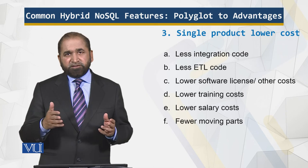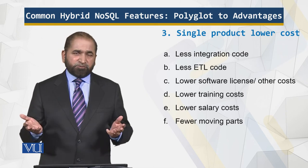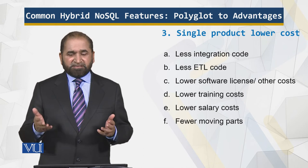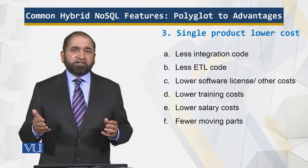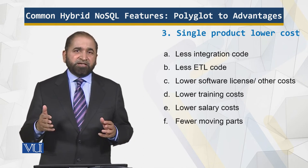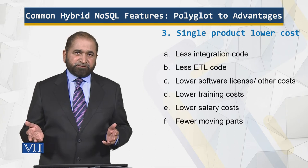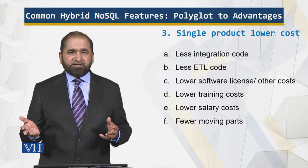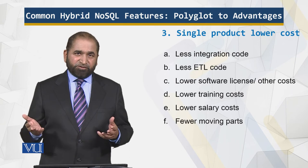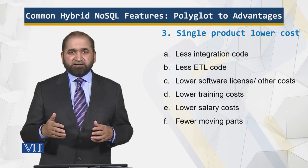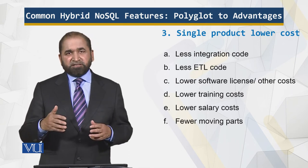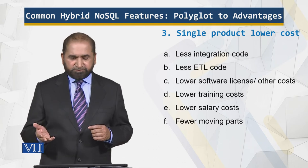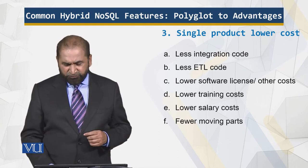Lower training costs — it costs more to train people in multiple products than in a single product. And of course, you don't need multiple specialists. If you have multiple specialists, you have multiple salaries, and that costs more. But if you have a single product, you have a single specialist, and you don't have to pay the salary of four people. And there are fewer moving parts.